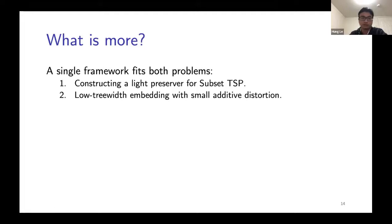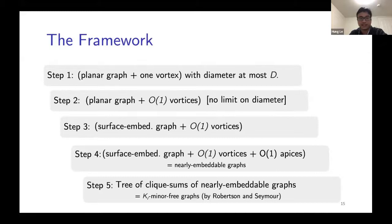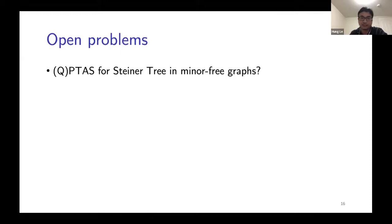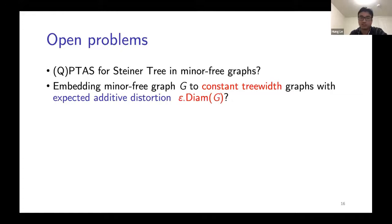We have a single framework that fits both problems, providing a way to construct light preservers for subset TSP and to compute low tree width embeddings. The framework has five steps and reduces both problems to instances in planar graphs plus one vortex, with diameter bounded by a parameter d. Open problems include whether we can get a QPTAS for Steiner tree in minor-free graphs, whether minor-free graphs can be embedded into constant tree width graphs with good additive distortion, and whether vehicle routing in minor-free graphs can be improved beyond a QPTAS.